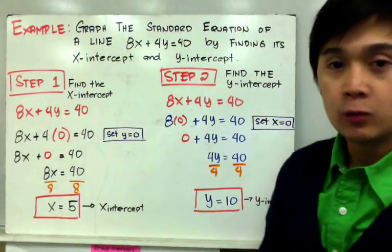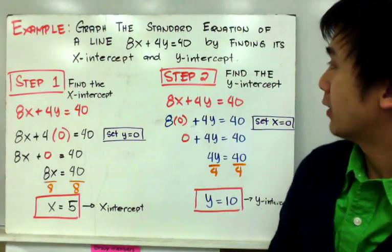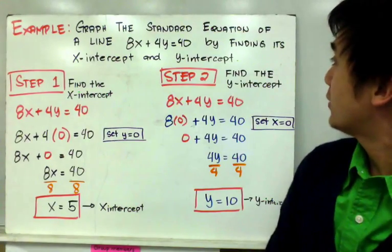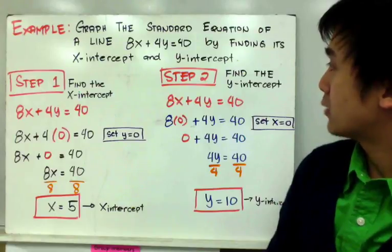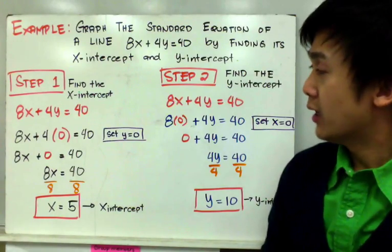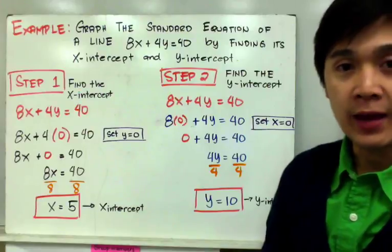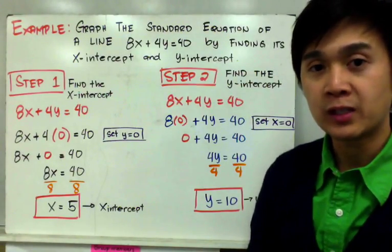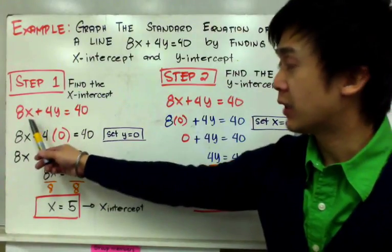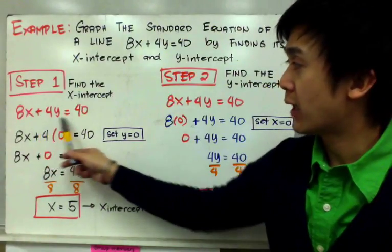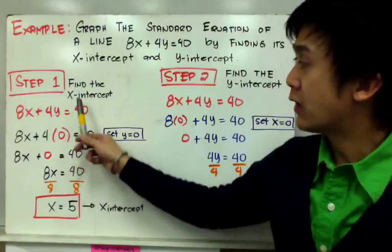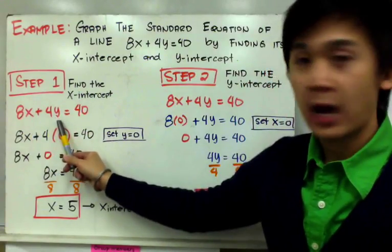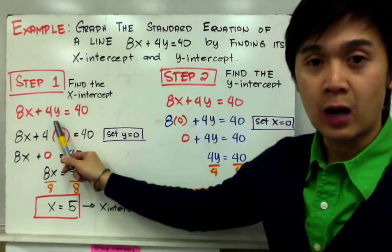For example, we need to graph the standard equation of a line given by 8x plus 4y equal to 40. Let's find its x-intercept and y-intercept to graph the equation. The first step is to find the x-intercept. The rule is simple: if you're looking for the x-intercept, we set y to 0 to eliminate y from the equation.